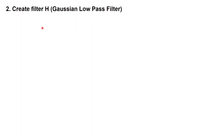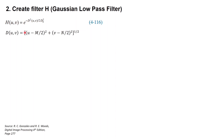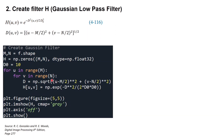The second step is to create the Gaussian low pass filter. Equation 4.116 is the two-dimensional Gaussian low pass filter — you can read the textbook to learn more about it. The Gaussian low pass filter is an exponential function with two parameters: parameter D, which is the radius or distance from the center, calculated with a specific equation, and parameter D0, which is the cutoff frequency and can be any positive number.